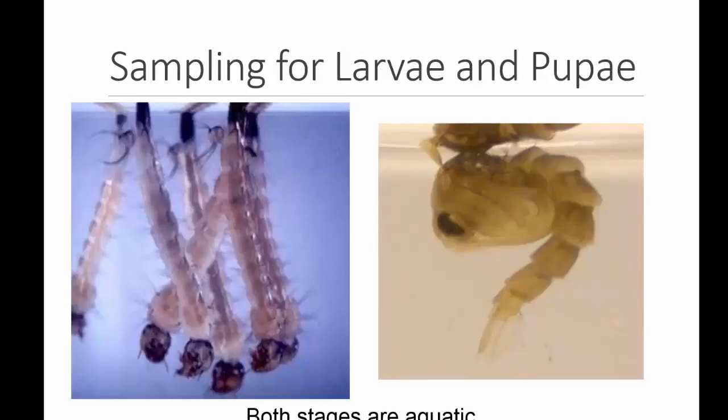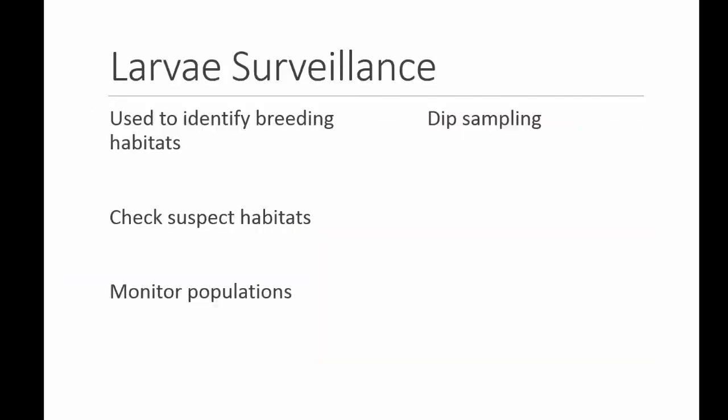So now let's talk about sampling for larvae and pupae. Remember, all the stages we've talked about up to this point have all been aquatic, including larvae and pupae. Larvae surveillance is usually used to identify breeding habitats, to check for suspect habitats, and to monitor populations.